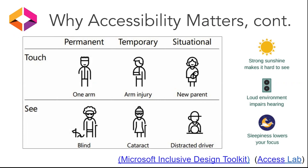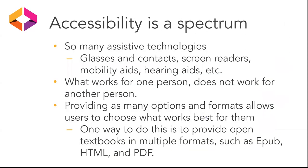For example, we have an image on the screen showing a permanent disability being if you only have one arm or one arm is physically disabled. A temporary disability could be an arm injury or your arm is in a sling. And situational is if you are a new parent carrying a child, or maybe you are carrying a big box and therefore only have one arm available. So there are lots of different ways that disability can present itself in day-to-day life.